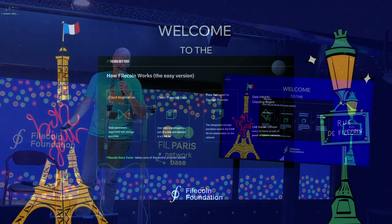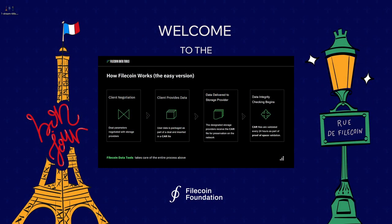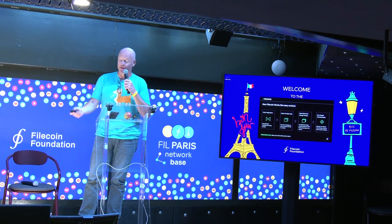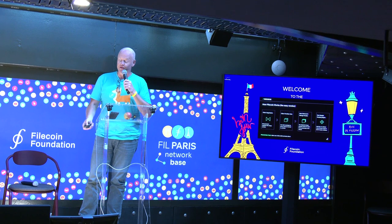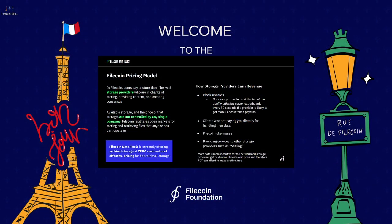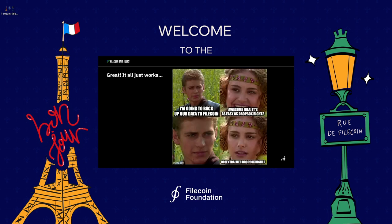The easy version of how Filecoin works is that we CAR up a file, build deal parameters negotiated with different storage providers, deliver the data over to the storage providers, and then data integrity checks happen on the back end. Very simple version — and that gives us a really competitive pricing model, which makes Filecoin very cool to work with.